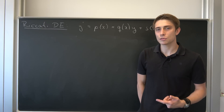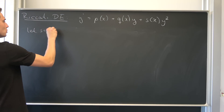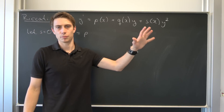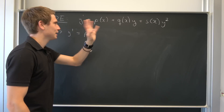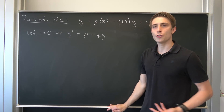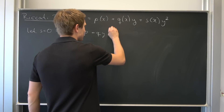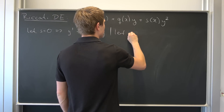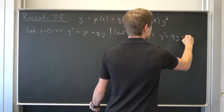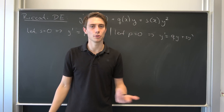We can consider two simple cases at first. Let s be equal to 0 — what does this imply? We end up with y prime equal to p plus q times y, and this right here is nothing but a first-order non-homogeneous differential equation. We know how to solve this, so we're done. The second case: let p be equal to 0, which implies y prime equals q times y plus s times y squared. We know how to solve this — this is nothing but a Bernoulli differential equation.